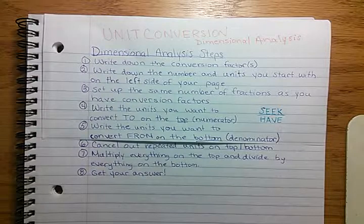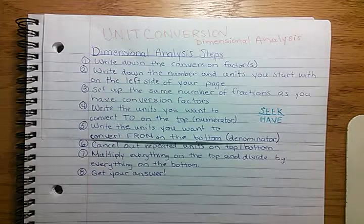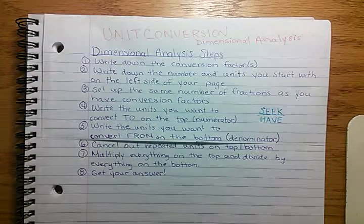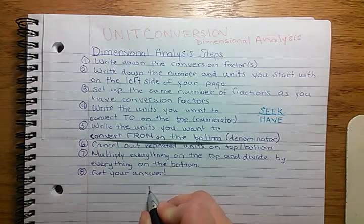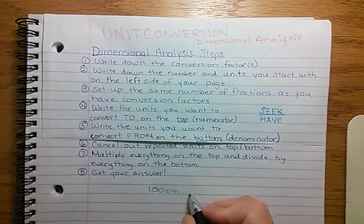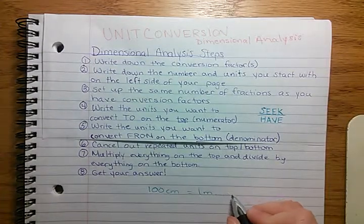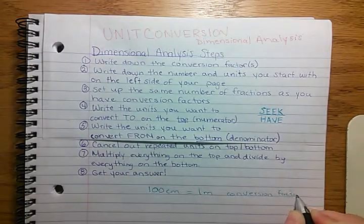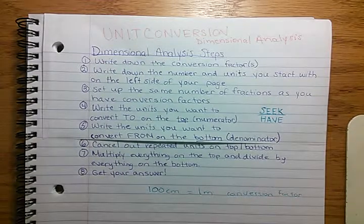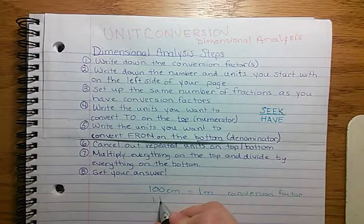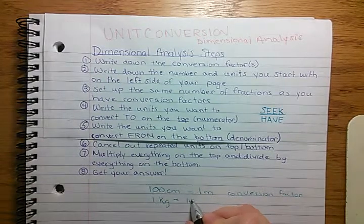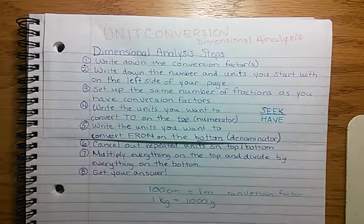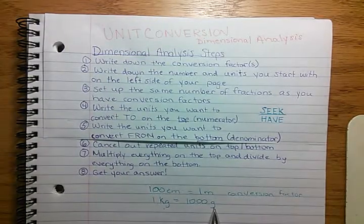Step one: write down the conversion factors. A conversion factor is an equation relating one unit to another. An example would be that 100 centimeters is equal to 1 meter. Another one would be that one kilogram is equal to 1,000 grams. So you're relating one unit to another.